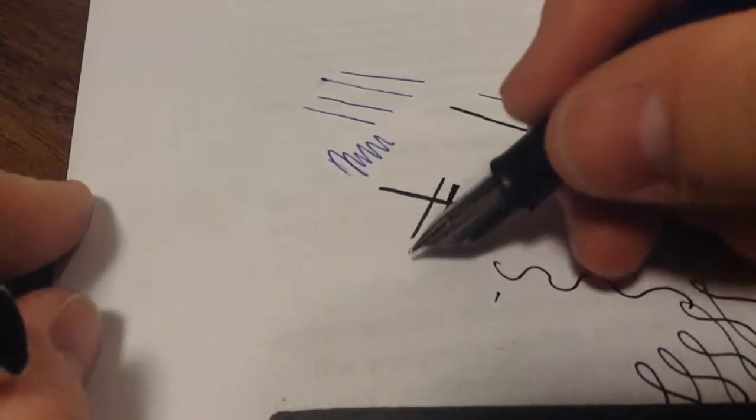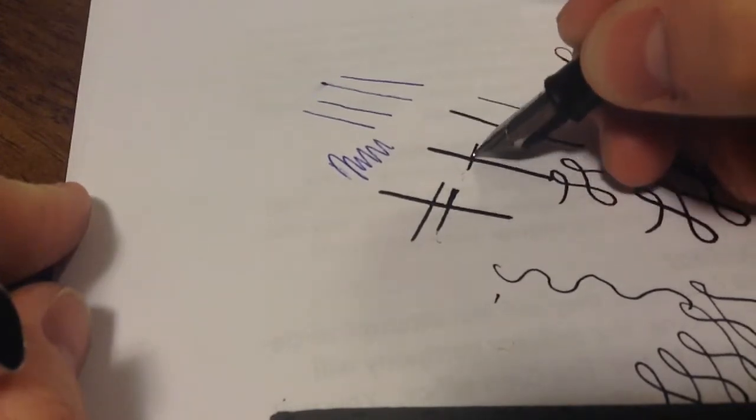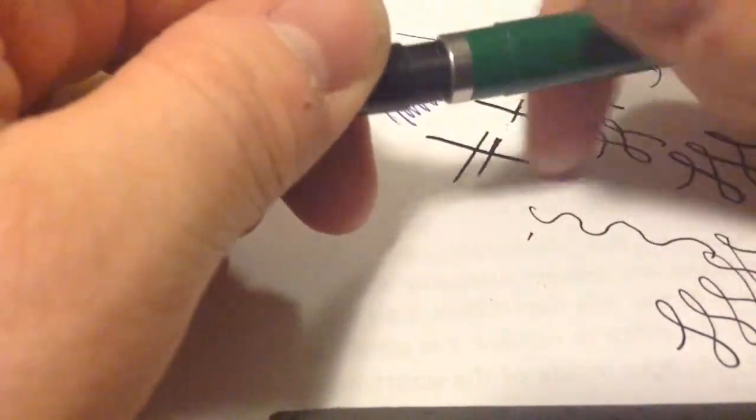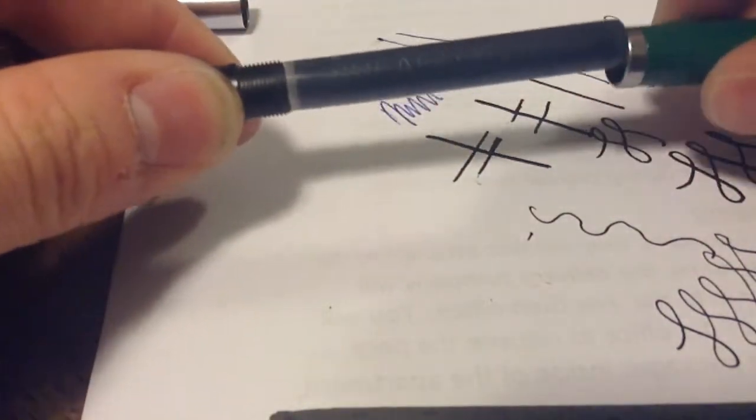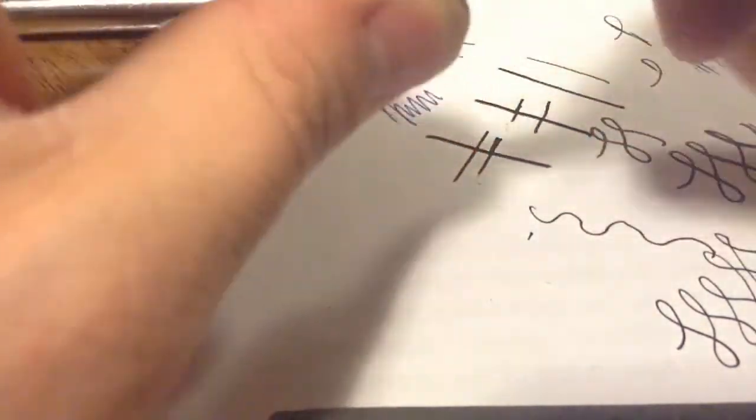Now, the finer pens will show up the detail in the line variations a lot better. Let's see if this will work. Don't look like it's working. Hold on one second. Let me unscrew this here. And, just get some ink flowing there. All right. Like I said, I got to flush this out. This one was sitting in a display case for a while with dried up ink in it.